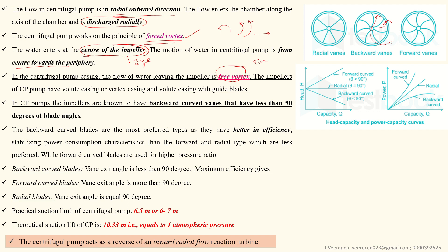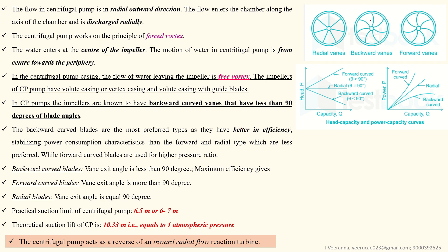The blade angle is also an important topic. Backward curved vanes have an angle less than 90 degrees and have higher efficiency, so they are most commonly used. Forward curved vanes have angles greater than 90 degrees. Radial vanes are at exactly 90 degrees. The backward blades curve in one direction while forward blades curve in the opposite direction.